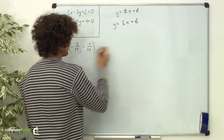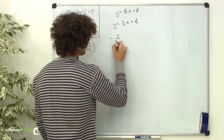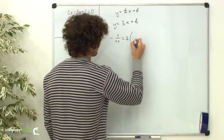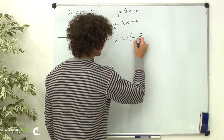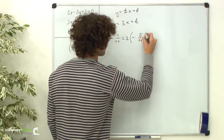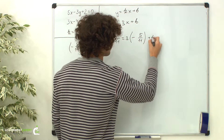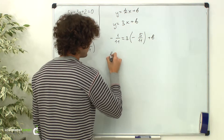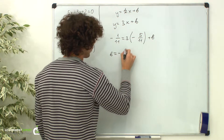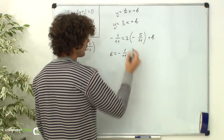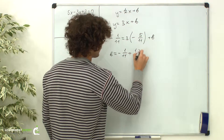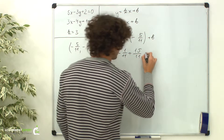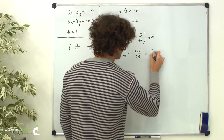We get negative 1/11 equals 3 times negative 5/11 plus b. Now we have b equals negative 1/11 plus 15/11, which equals 14/11.